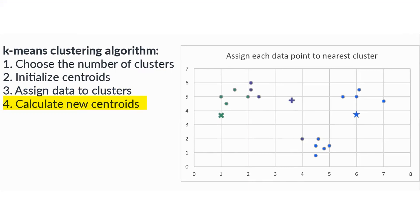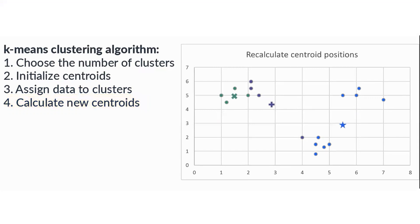This is the first iteration — steps three and four done. This is the first assignment of the data points to their centroids. If you were to perform this iteration again, notice how the centroids are moving closer and closer to the data points. You would repeat steps three and four until all the clusters reach convergence, which means the data points are stable and no longer assigned to other clusters. That's when you know your cluster command is complete.